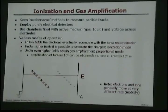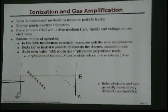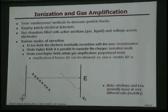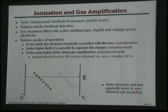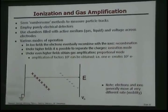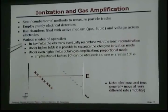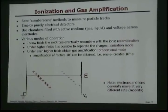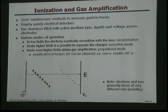And then what will happen, you put a voltage across these things, and then they will drift. Electrons will drift to the anode, positive ions will drift towards the cathode. Now you can operate these things in different modes depending on the voltage you put across the electrodes.